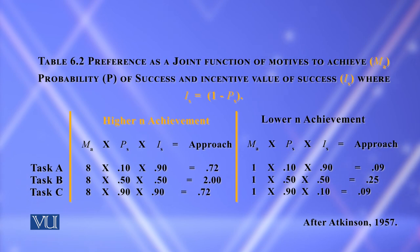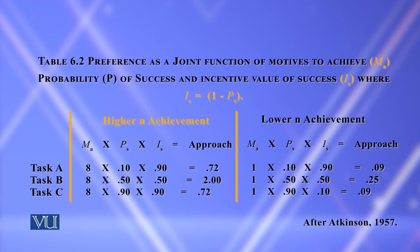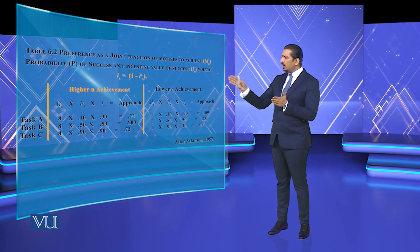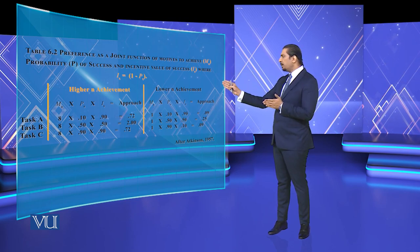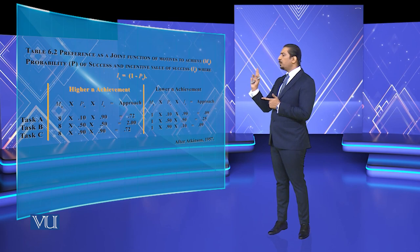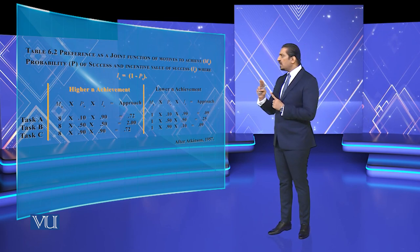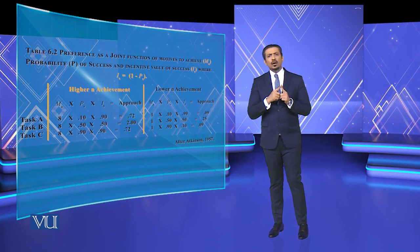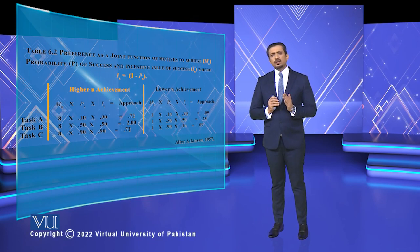Where i equals one into p. In the approach, you can see tasks A, B, and C. Technically, looking at the ratios of M, P, and I, high-end achievements give results alongside lower-end achievements. Mathematically, in task orientation, you look at the result for task A. You calculate M multiplied by P and then I — that is, the preference as a joint function of motives to achieve (M), the probability of success (P), and the incentive value of success (I). The ratios show both higher-end and lower-end achievement.